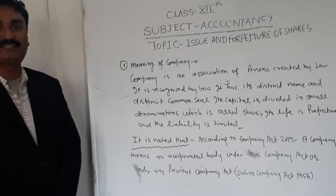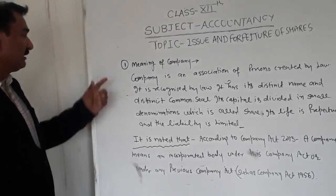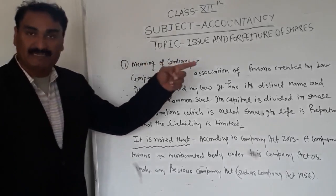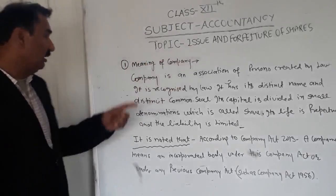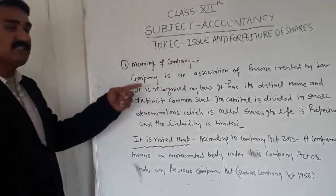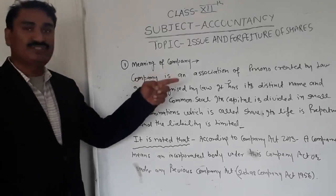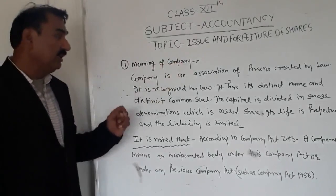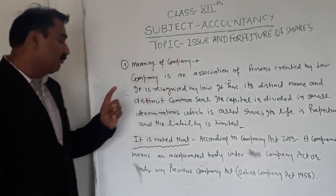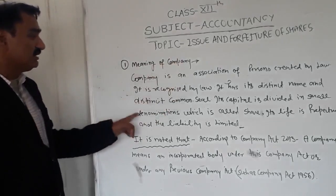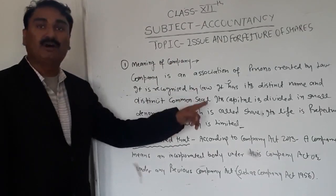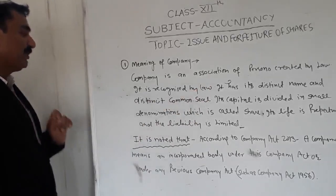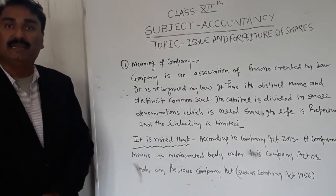Now let's start the meaning of company. What is a company? A company is an association of persons created by law. It is recognized by law and it has its distinct name and distinct common seal. Its capital is divided into small denominations called units or shares, and its life is perpetual and the liability is limited.